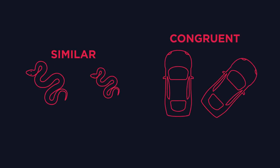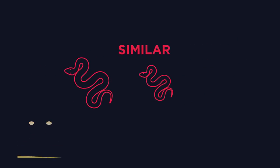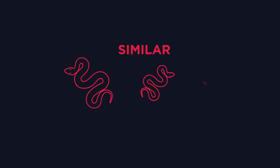So what is the difference between similar and congruent? Pause the video and have a think. Similar shapes are identical but just a different size. Think snakes — they have scales, so similar shapes are scaled up or down versions of one another. They can also be rotated or reflected.